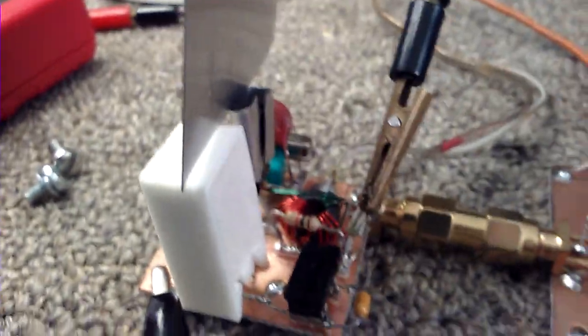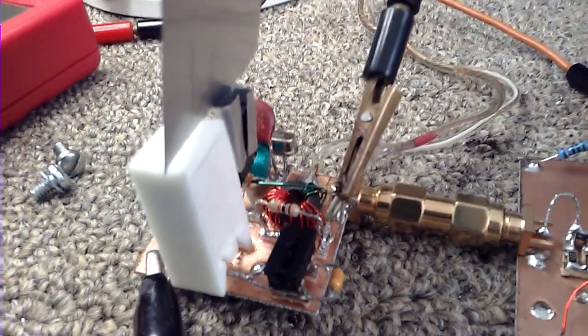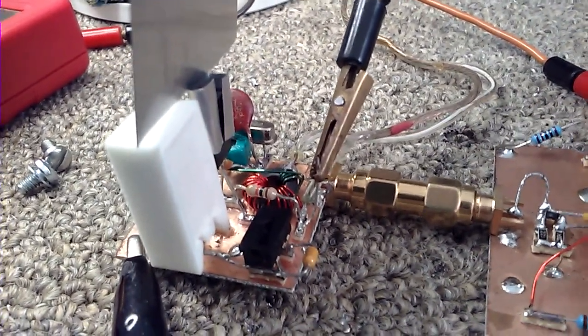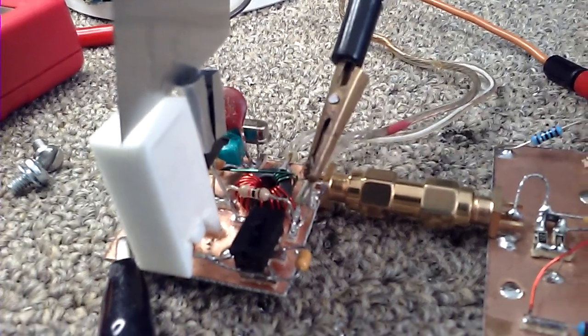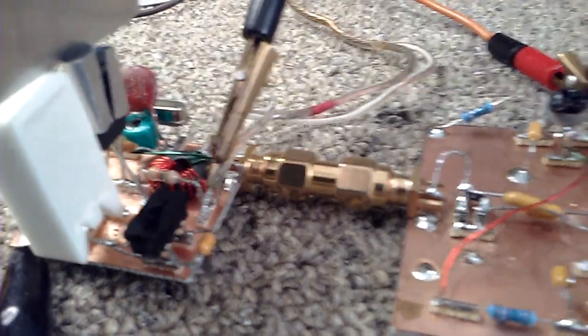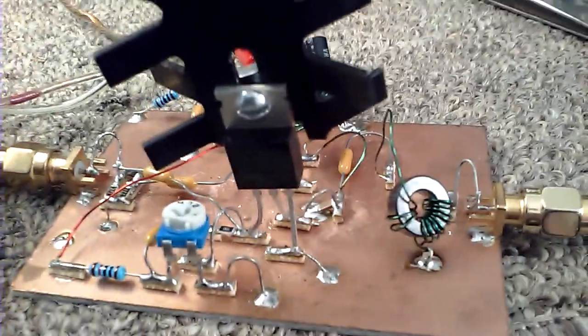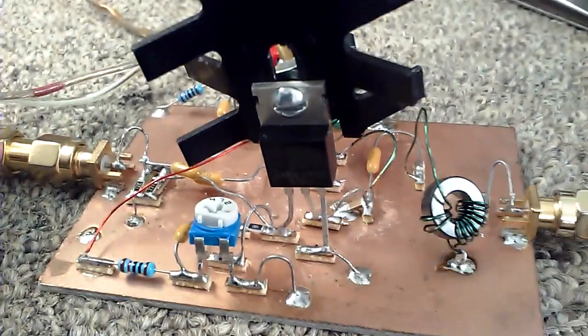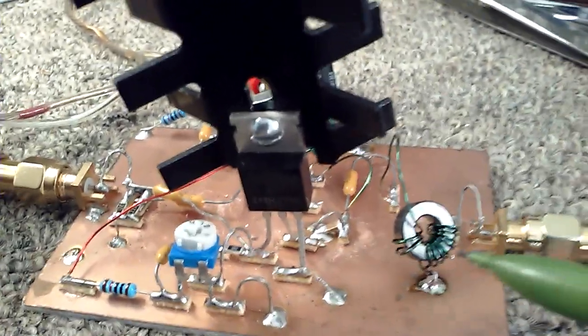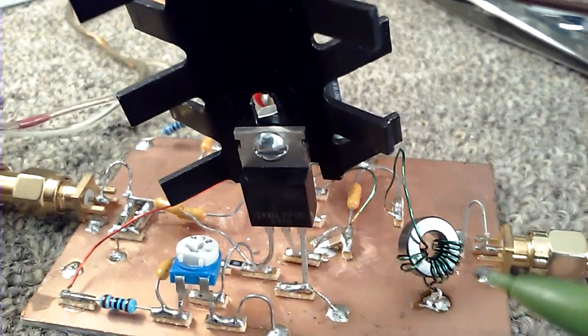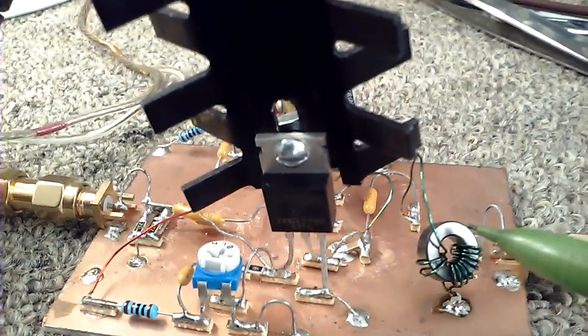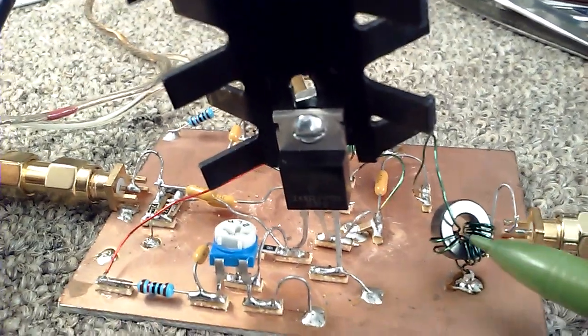I'm using the MightyMite oscillator operating at 3.68 megahertz and putting out 800 milliwatts. I've got an IRF510 MOSFET, and I'm using two and a half turns to seven turns on a T37-43 toroid.